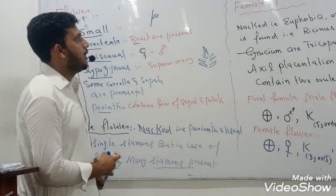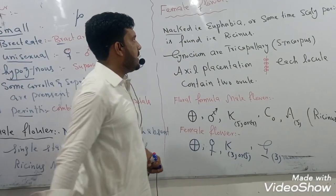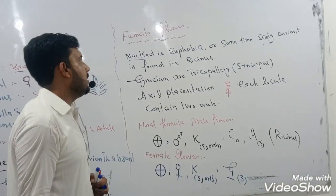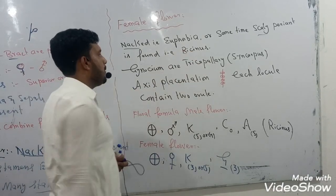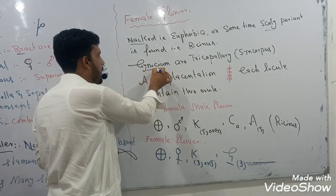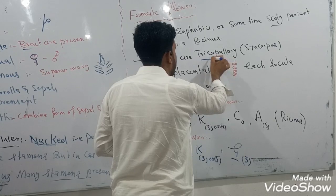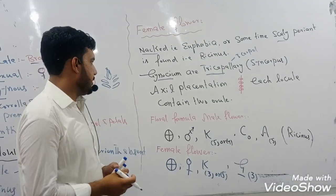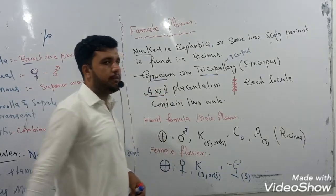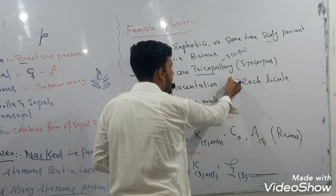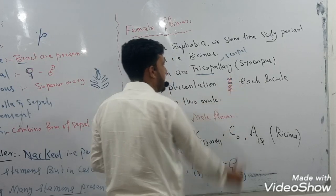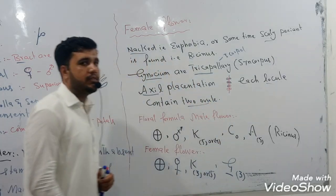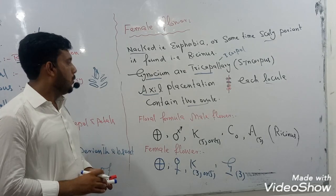The female flower is also naked in some cases, like Euphorbia, and in some cases they have scaly perianth, as found in Ricinus, which is a member of family Euphorbiaceae. The gynoecium, which is the female reproductive unit, is present, and there are tri-chambered carpels — they contain three carpels which are fused with one another, known as syncarpous condition. The placentation is axial, in which seeds or ovules are attached to the main axis. Each locule contains two ovules.